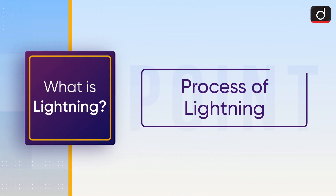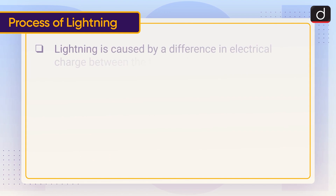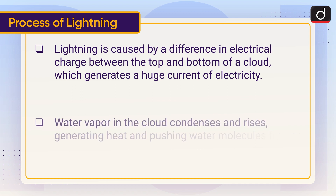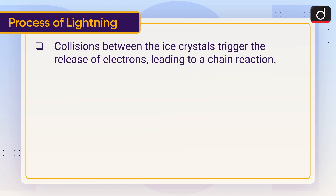Now moving on to the process of lightning. Lightning is caused by a difference in electrical charge between the top and bottom of a cloud, which generates a huge current of electricity. Water vapor in the cloud condenses and rises, generating heat and pushing water molecules further up until they become ice crystals. Collisions between the ice crystals trigger the release of electrons, leading to a chain reaction.